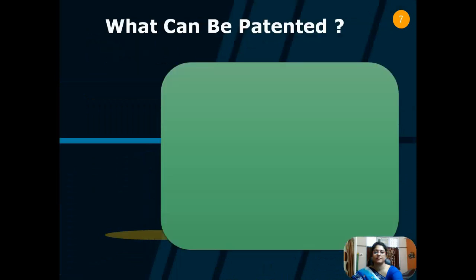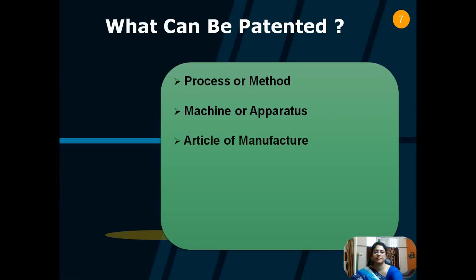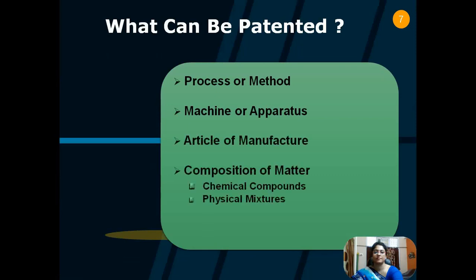What can be patented? As we have learned, there are four different types of patents. The entities that may be patented include: process or method, machine or apparatus, article of manufacture, composition of matter including chemical compounds and physical mixtures, and improvements of any of the above.